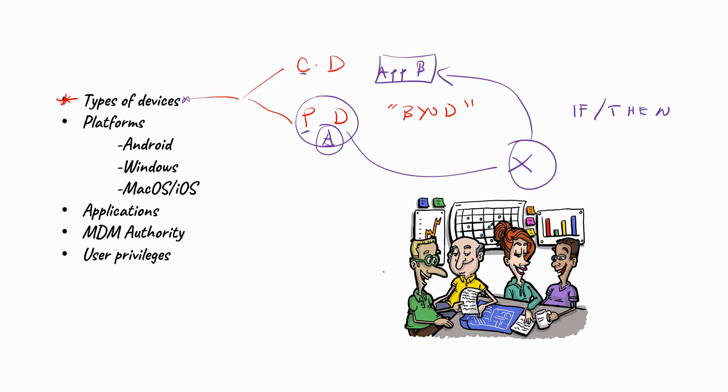For example, in this scenario where we have a conditional access policy, it simply states that if a device is in location A and would like to have access to application B, then grant access to it. So device, if device is in location A, then grant access to it.